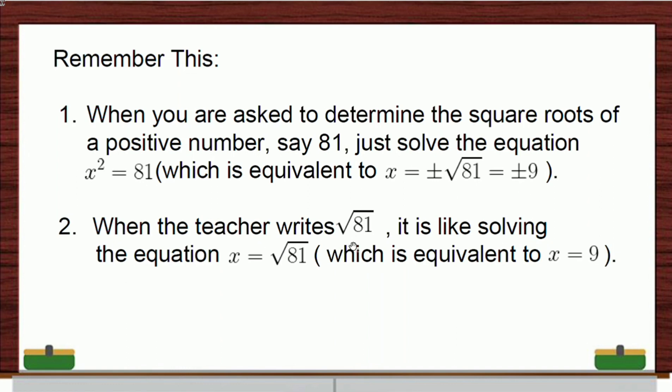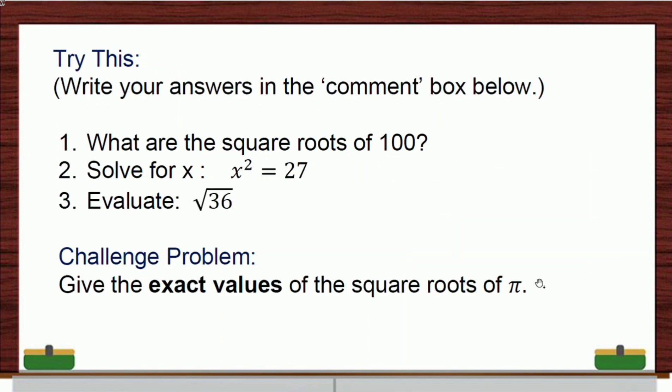But when the teacher writes radical of 81, again, this is not the square root of 81 that we know. But rather, it's the principal square root of 81. So, it is like solving the equation x equals the radical of 81. That when you solve this, this is equivalent to x equals 9. So, the negative sign will not evolve from this symbol. This means we are getting the positive root of 81 and the answer is positive 9.